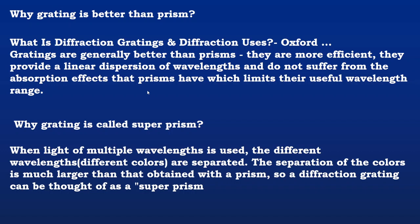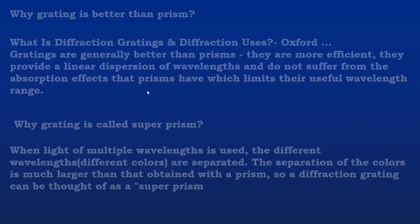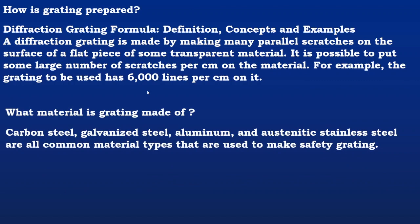How is grating prepared? A diffraction grating is made by making many parallel scratches with the support of diamond cutter on the surface of a flat piece of some transparent materials like silica or quartz glasses.